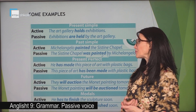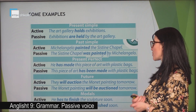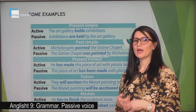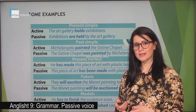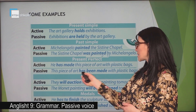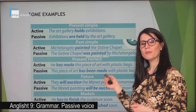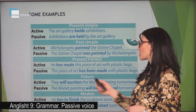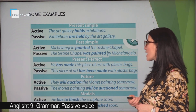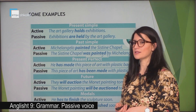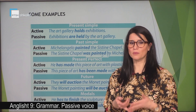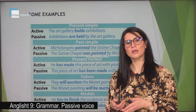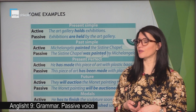Present perfect: he has made this piece of art with plastic bags. The verb is 'has made'. Have a look at how we form the passive in the present perfect — it is 'has been' or 'have been' plus the past participle of the verb. So: this piece of art has been made with plastic bags. How do we form the passive in the present perfect? Have or has been plus the past participle of the verb.